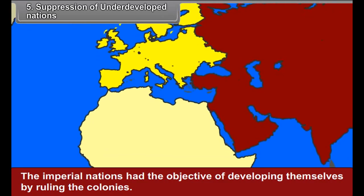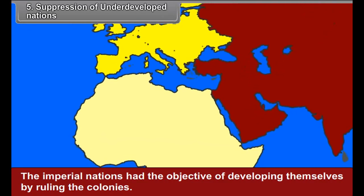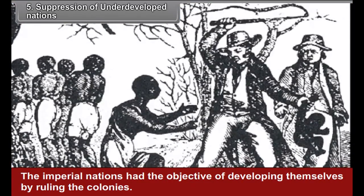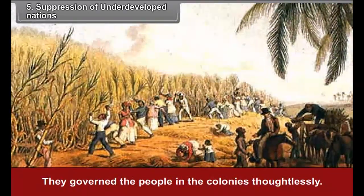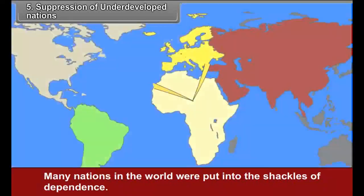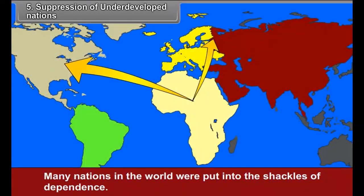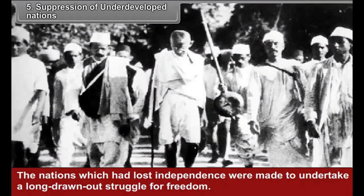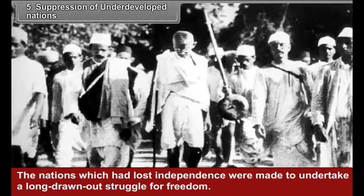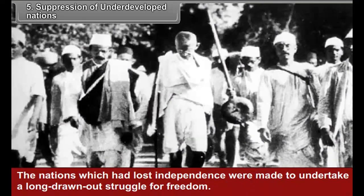Fifth, suppression of underdeveloped nations. The imperial nations had the objective of developing themselves by ruling the colonies. They governed the people in the colonies thoughtlessly, and many nations in the world were put into the shackles of dependence. The nations which had lost independence were made to undertake a long-drawn-out struggle for freedom.